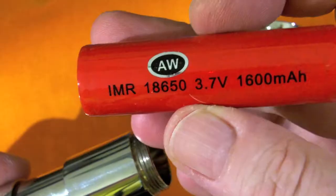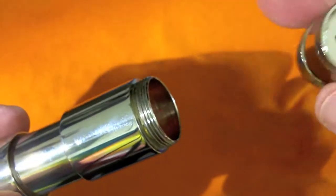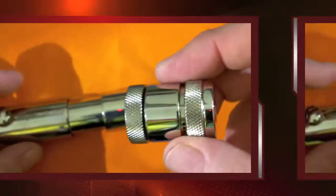I'm going to grab an AW IMR 18650 here and pop that in. Now we're all ready for the atomizer connector and the collection cup.